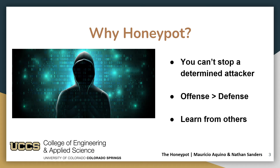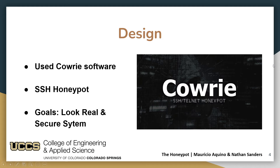With that I'm going to pass it to Mauricio and he's going to start talking about the honeypot that we created. So when we first moved into design we looked at the different types of honeypots and what software was available. We ended up choosing to go with the Cowrie software, which is an SSH honeypot, due to the fact that it gave us the right amount of interactivity that we were looking for. Our two main goals for design were: we wanted to create a honeypot that looked real, and we also wanted to make sure that our system hosting the honeypot was secure. These were two key factors to making this something that was both useful and did not present any risks for us.